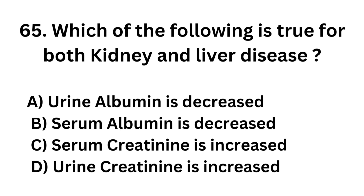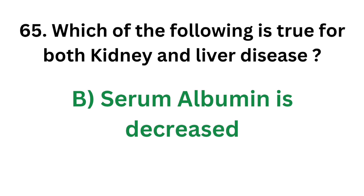Question number 65. Which of the following is true for both kidney and liver disease? Option A - Urine albumin is decreased; Option B - Serum albumin is decreased; Option C - Serum creatinine is increased; Option D - Urine creatinine is increased. The correct answer is Option B, serum albumin is decreased. If serum albumin is decreased, it indicates kidney and liver disease.